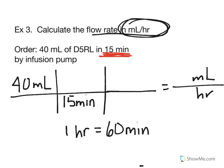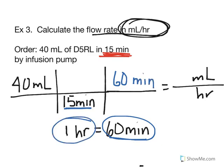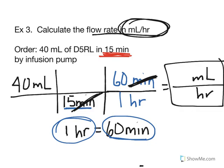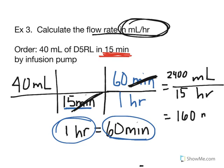Because my problem already has 15 minutes on bottom, I'm going to use 60 minutes on top and the one hour on bottom. Notice now my minutes on top cancel with my minutes on bottom. On top I'm left with milliliters and on bottom I'm left with hours - milliliters per hour, which is what I want in my final answer. So I'm going to multiply across the top, multiply across the bottom, and get my final answer by dividing the top by the bottom: 160 milliliters per hour is my final flow rate setting.